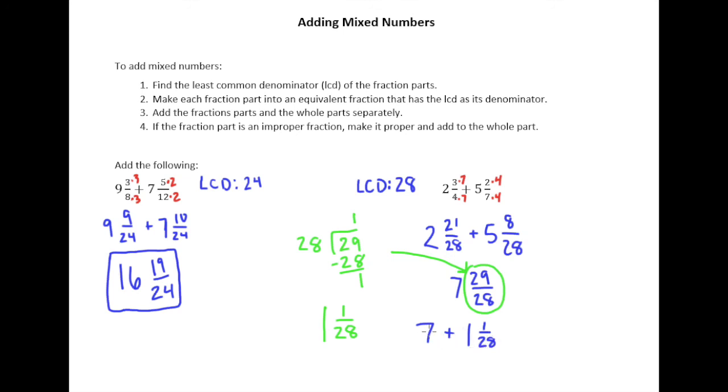So we can see, well I can just add my 7 and my 1 together. And so this is going to be 8 and 1 twenty-eighth.